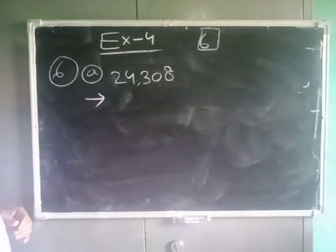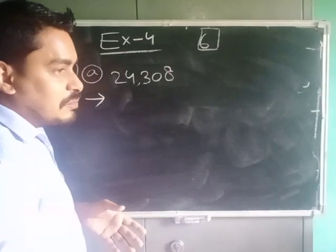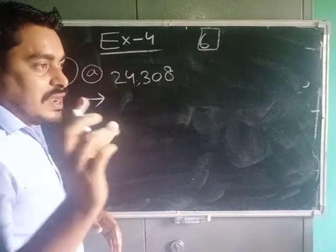Okay, so expanded form means you have to find out the place value of each of the digits and then after you have to add them.